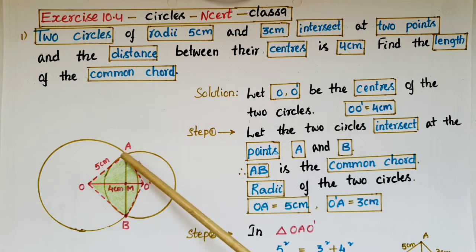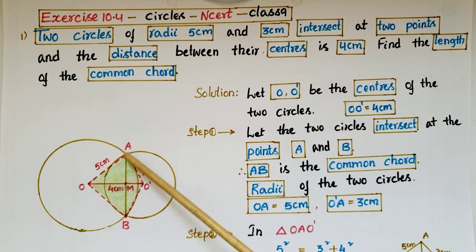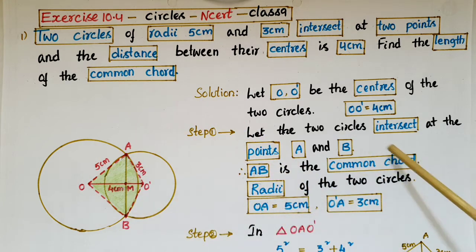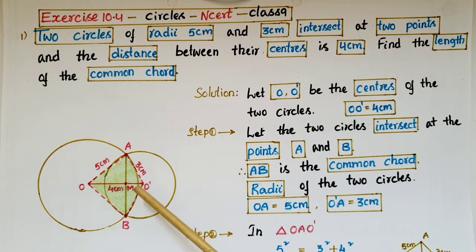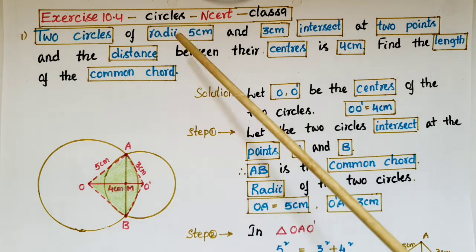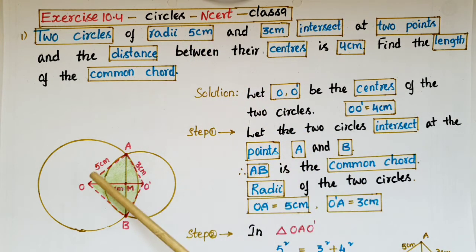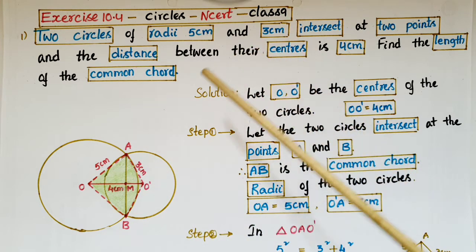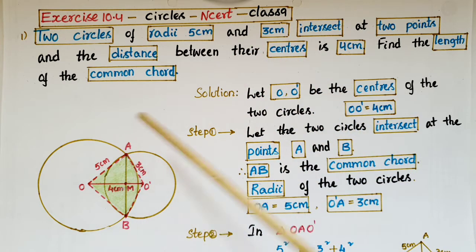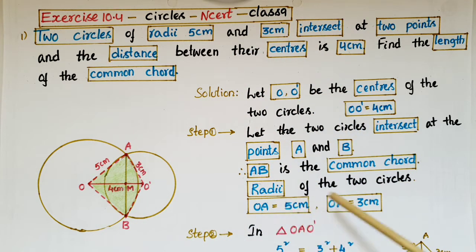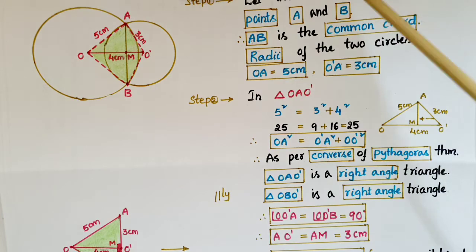If you join these two points you will get a line segment AB. This is the common chord of these two circles. So AB is the common chord of these two circles. Here the radius is given as 5 centimeters for the first circle and the radius of the second circle is 3 centimeters. So OA is equal to 5 centimeters and O'A is equal to 3 centimeters.